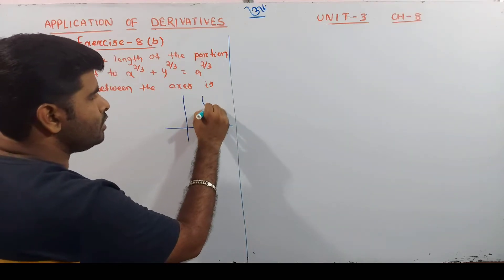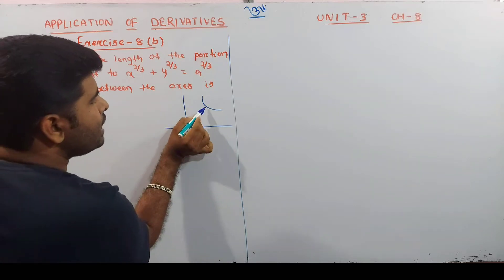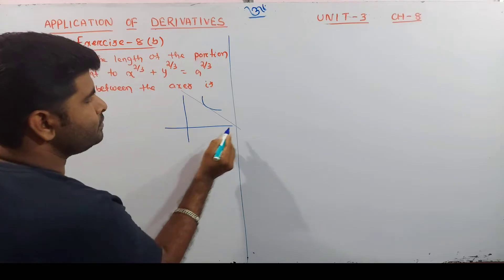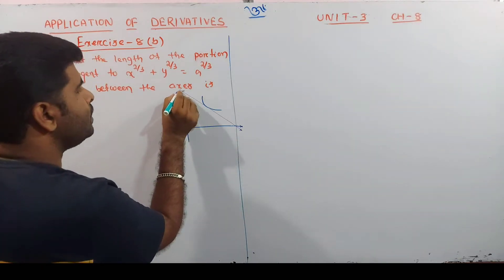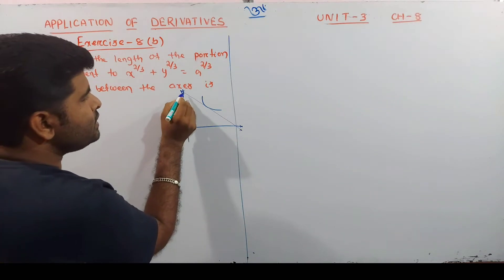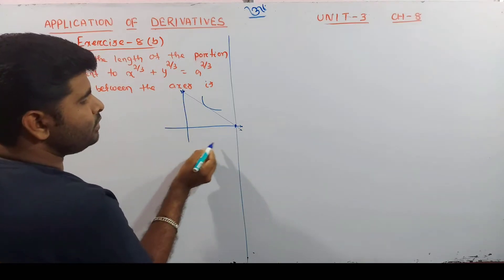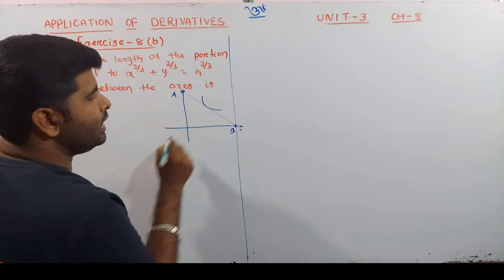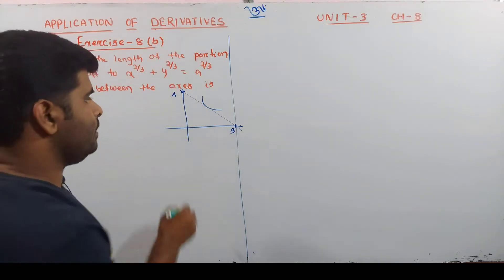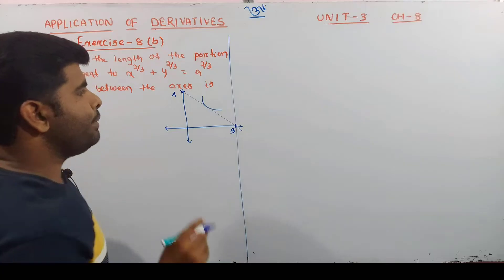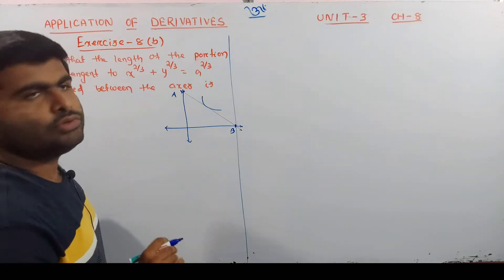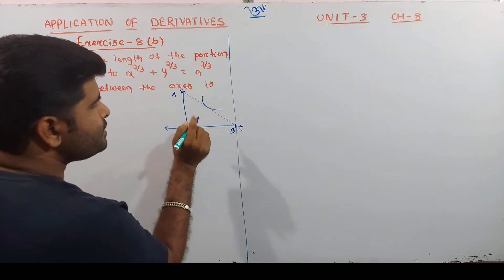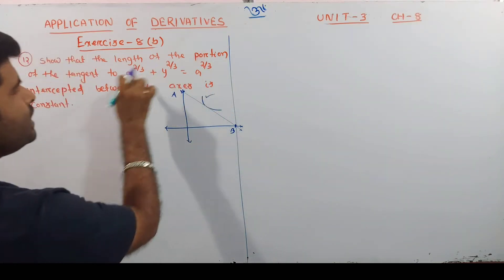If you have a curve, you can write the curve. If you have a tangent, you must be able to draw it. If you have a length, if you have two points, then you can show the AB length is constant. So first, let's look at this constant equation.